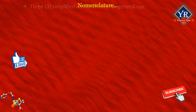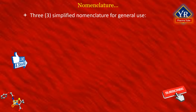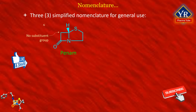Three simplified forms of penicillin nomenclature have been adopted for general use. The first uses the name PINAM for the unsubstituted bicyclic system, including the amide carbonyl group, with one of the foregoing numbering systems as just described. Thus, penicillins generally are designated as 5-acylamino-2,2-dimethyl-PINAM-3-carboxylic acids.